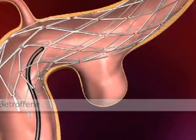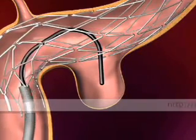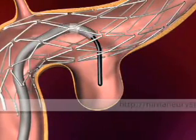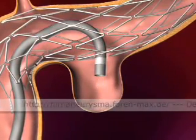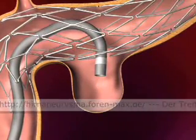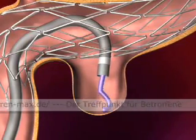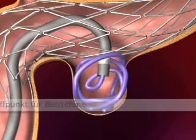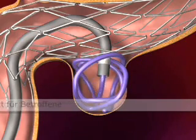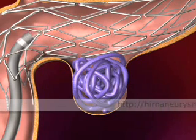Aneurysm embolization. Standard microcatheters with a distal tip OD of less than 2 French may be carefully placed through the interstices of the stent to place embolic coils in the aneurysm. Once aneurysm occlusion has been accomplished, the microcatheter is withdrawn from the aneurysm.